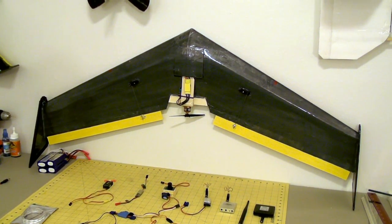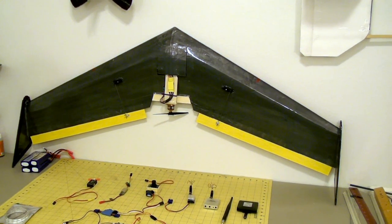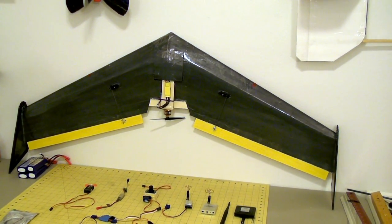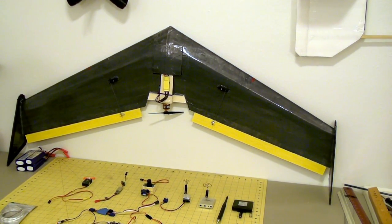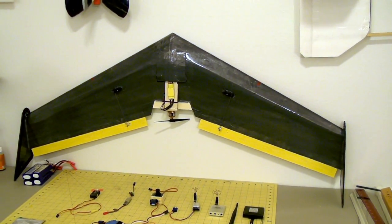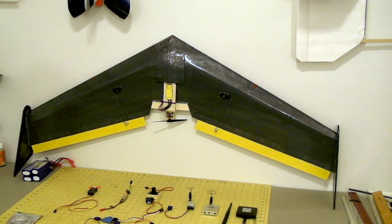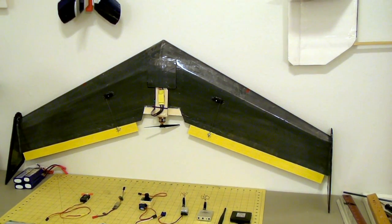So I went ahead and built another one. This is out of black Dollar Tree foam, very light, covered with packing tape. I'm using eighth-inch balsa for control surfaces. Haven't flown it yet but I think it'll fly really well. It's a lot lighter than the other plane was and I decided I'll probably put some FPV gear on that.